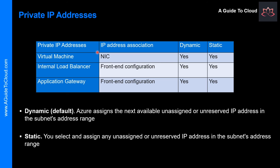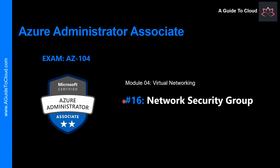Azure can provide an IP address through dynamic assignment, or you can assign the IP address as a static assignment. A private IP address is allocated from the address range of the virtual network subnet the resource is deployed in, which can contain both dynamic and static assignments. Now that we've learned about public IP, private IP, and the difference between static and dynamic ranges, in the next lesson we're going to learn about network security groups. I will see you in the next one. Take care.